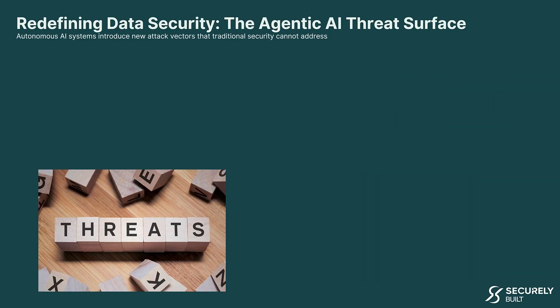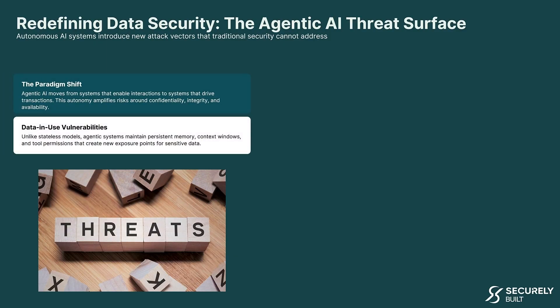Agentic AI is really redefining data security. We're dealing with autonomous AI systems that introduce new attack vectors that traditional security simply cannot address. Agentic AI moves us from systems that enable interactions to systems that drive transactions. That autonomy amplifies risks around confidentiality, integrity, and availability. Unlike stateless models that just respond to prompts, agentic systems maintain persistent memory, context windows, and tool permissions — creating entirely new exposure points for sensitive data.